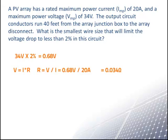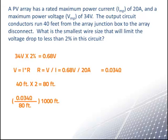Since we have both a positive and a negative wire between the junction box and the disconnect, the travel length of the photovoltaic output circuit conductors is 40 feet times 2, or 80 feet. Therefore, the maximum resistance allowed per 1000 feet of round trip conductor length is 0.034 ohms divided by 80 feet, times 1000 feet, which comes out to be 0.425 ohms per kilofoot.